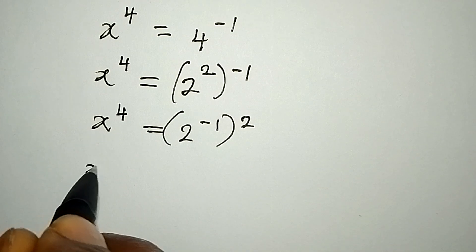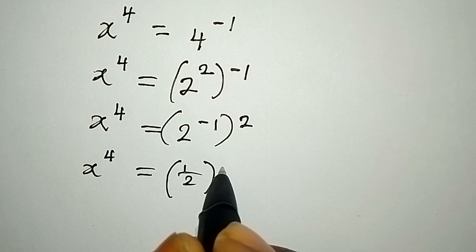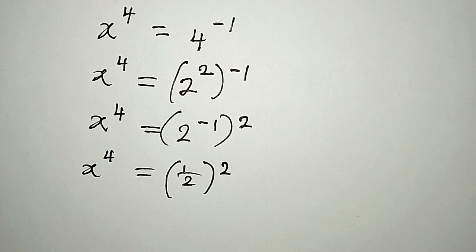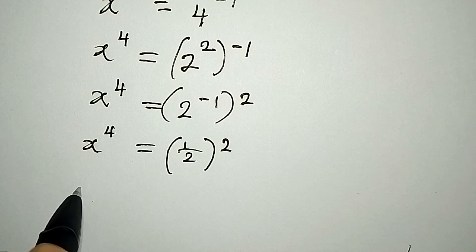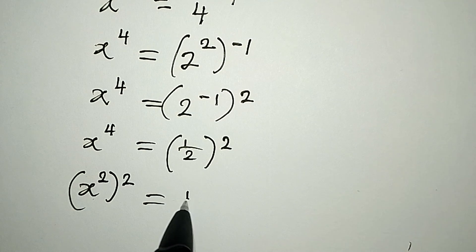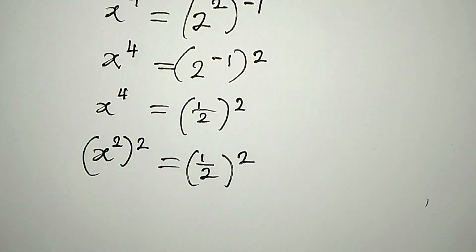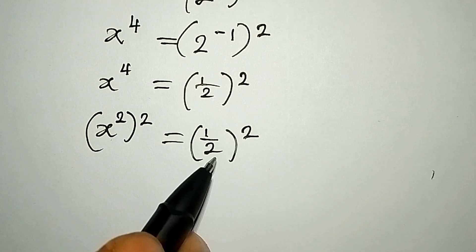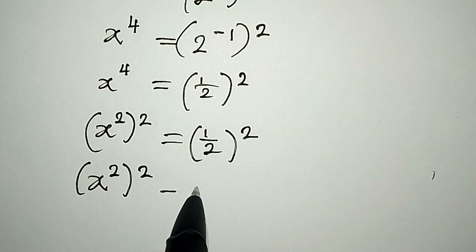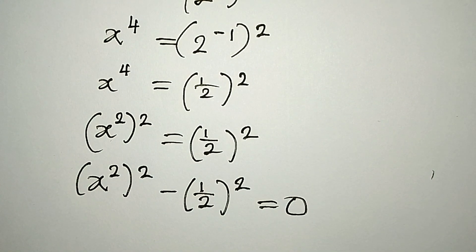To continue, x to the power of 4 is equal to 1 over 2 squared. We can break this down so that x squared to the power of 2 equals 1 over 2 squared. Bringing the right side to the left, we have x squared to the power of 2 minus 1 over 2 squared equals 0.